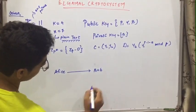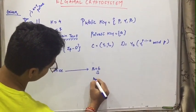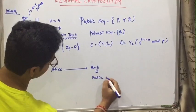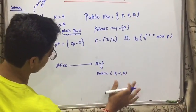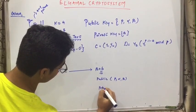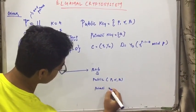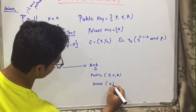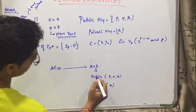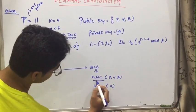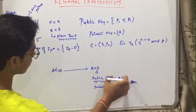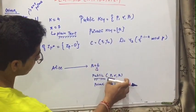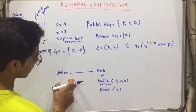So what Bob will do, he will generate one public key in the form of p, alpha and beta. There will be some of the parameters and there will be a private key which he will generate and that will be only A. Now what Bob will do, Bob will produce this publicly, this key. It will share to all the people around the world and it will share this public key to Alice as well.